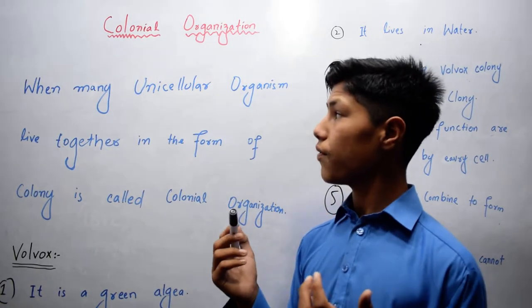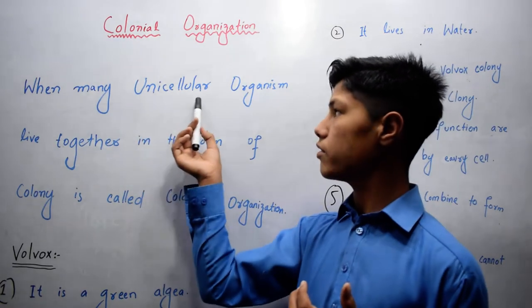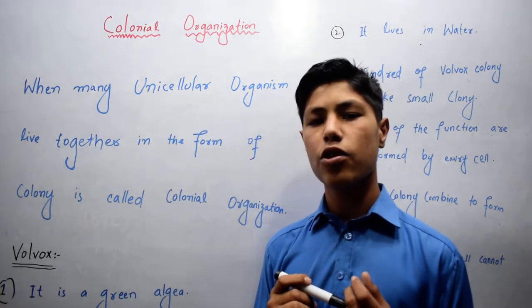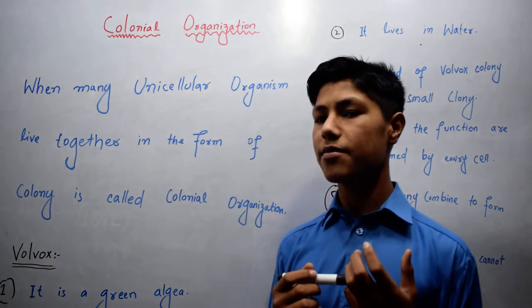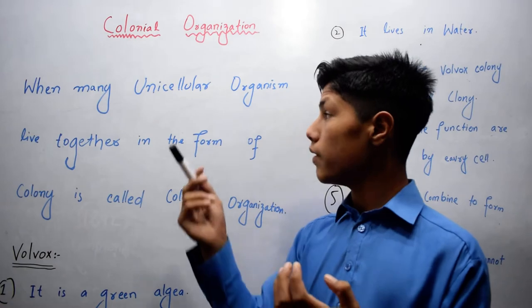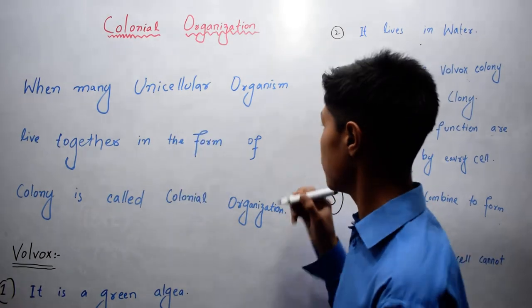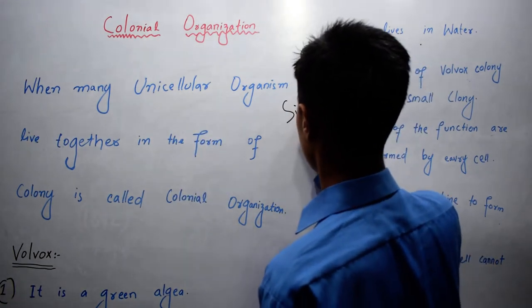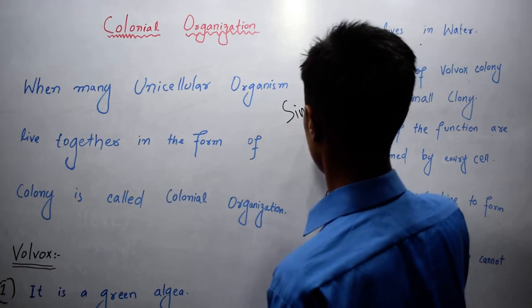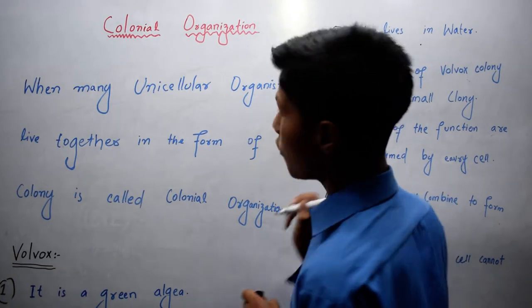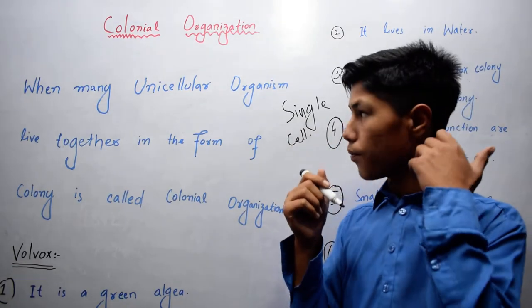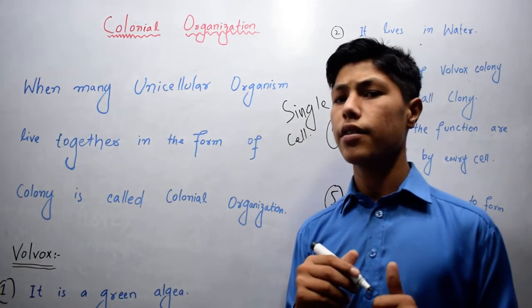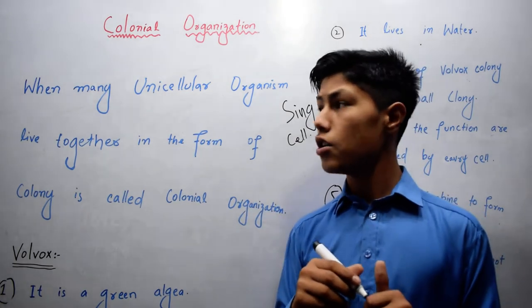So first of all, what is a unicellular organism? Unicellular organisms are those organisms which have single cells, and all the functions in the body are performed by this single cell.